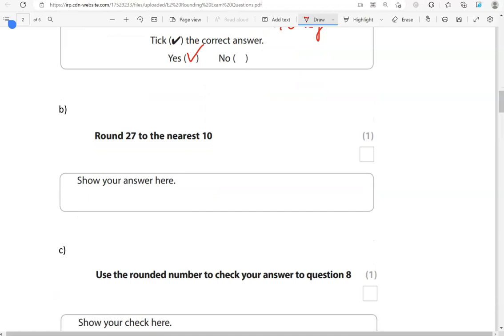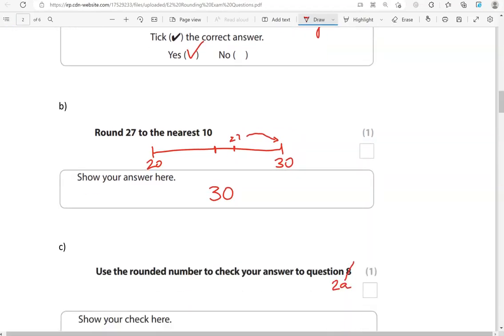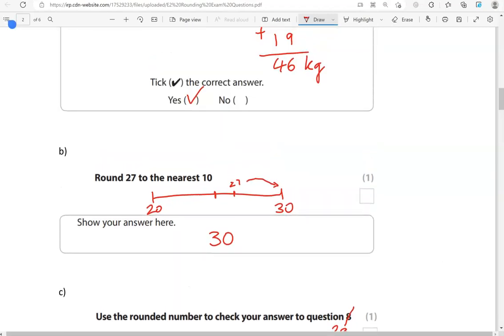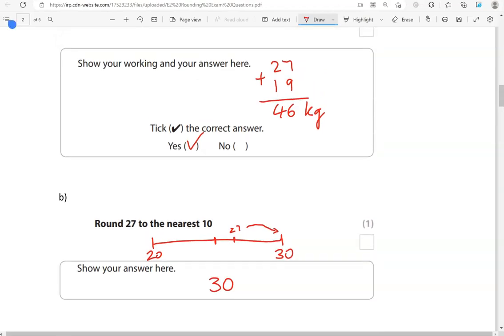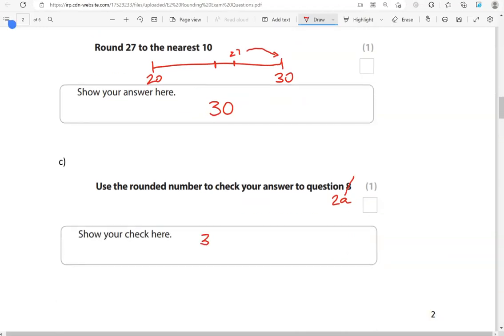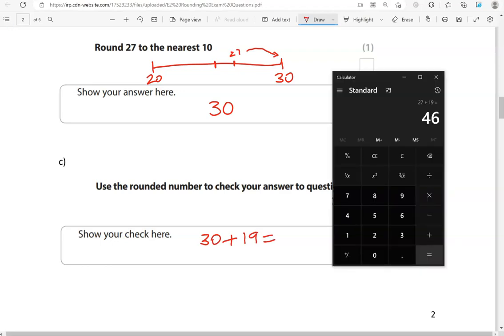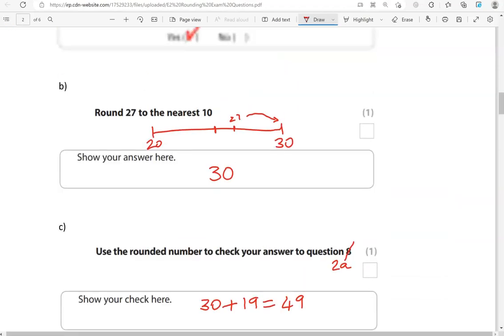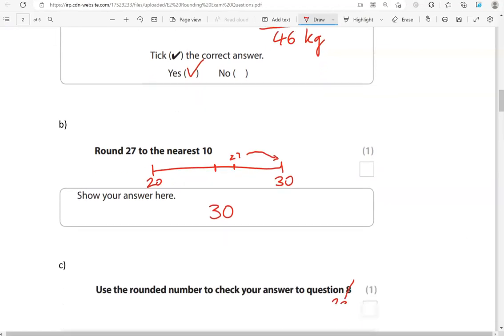Round 27 to the nearest 10. So 27 is between 20 and 30, more than 20 but less than 30. 25 is right here in the middle. 27 is about here. That's closer to 30 than it is to 20. So we're going to round it to 30. Use the rounded number to check your answer to question 2A. So that is 30 add 19, which gives us 49. 49 is very close to the 46. So that shows us we've done the calculation correctly.